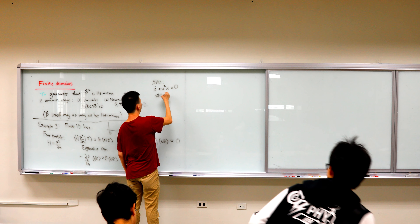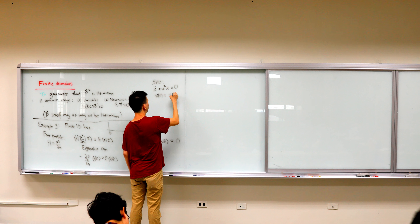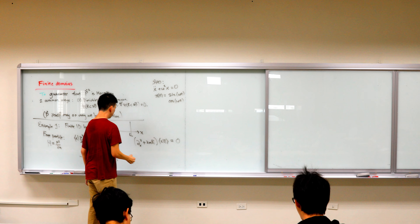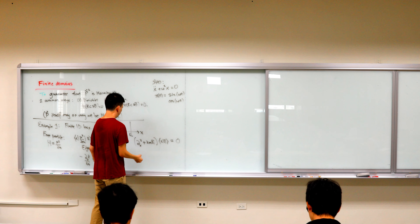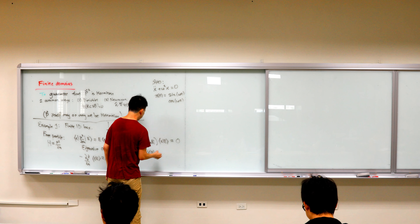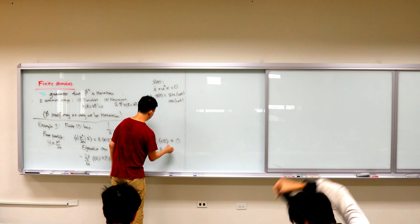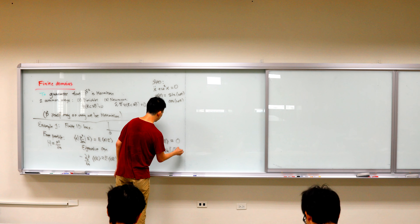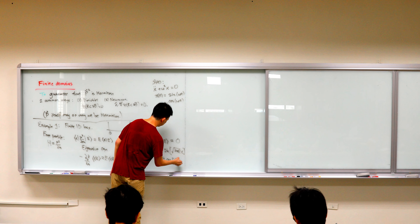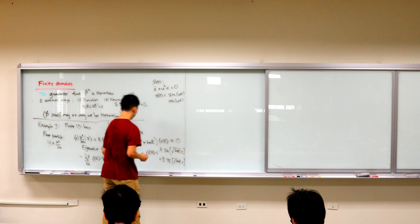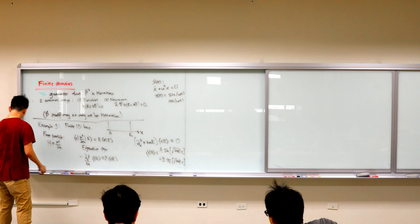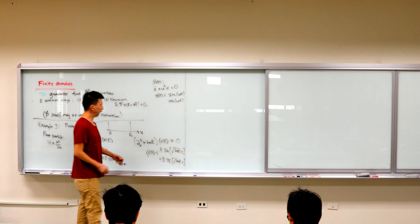Likewise in this case, you will discover that the solution, or the eigenvector, is just either sine of sqrt(2ME) times x, or cosine of sqrt(2ME) times x. But right now we've only solved a differential equation — we haven't imposed a boundary condition.